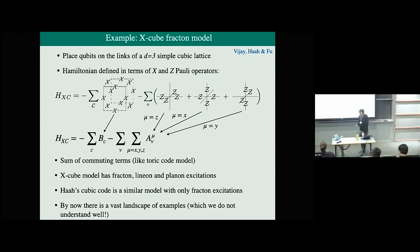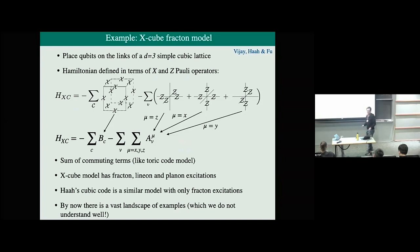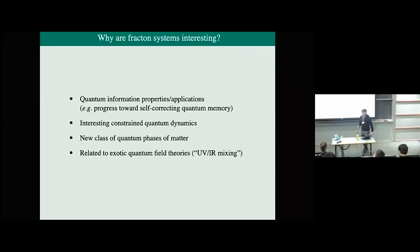We do not understand this landscape of models very well. It's a big and complicated zoo. Some individual examples we understand quite well, but we don't really have a good sense of the lay of the land. There are simple models in which these phenomena occur, there are actually many of them, and we don't have a good understanding of the landscape.